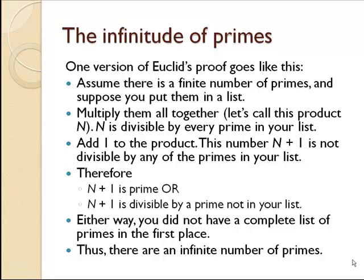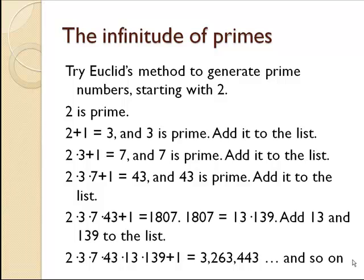We can use Euclid's method to generate prime numbers. Say we start with two. Two is prime, so two plus one is three. Three is prime, so we add it to our list. Now our list contains two and three. We multiply those together: two times three, add one, and we get seven. Seven is a prime number — we add that to the list. Now two times three times seven, plus one, gives us 43. Forty-three is prime, so we put that on the list of primes.